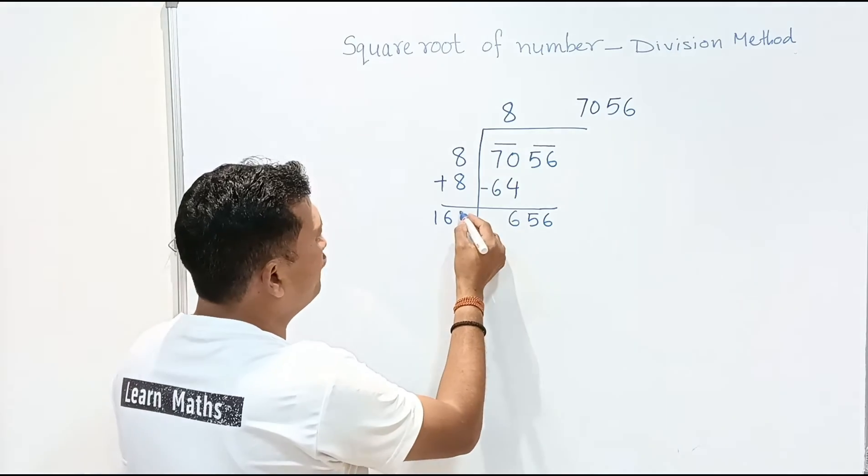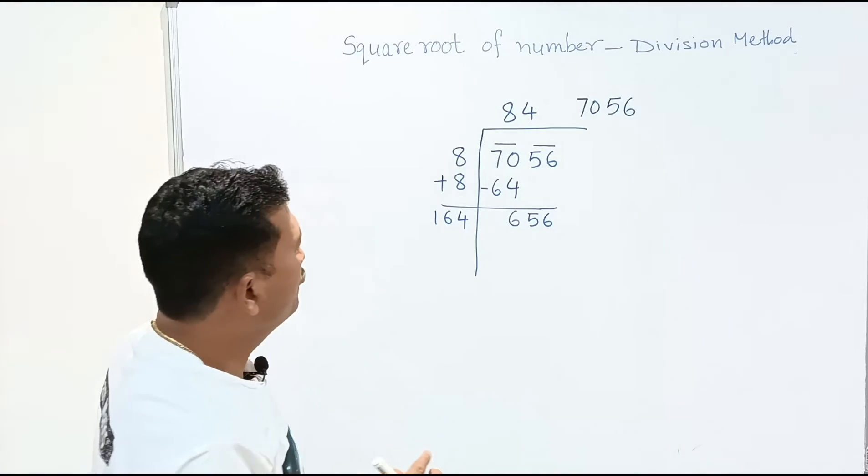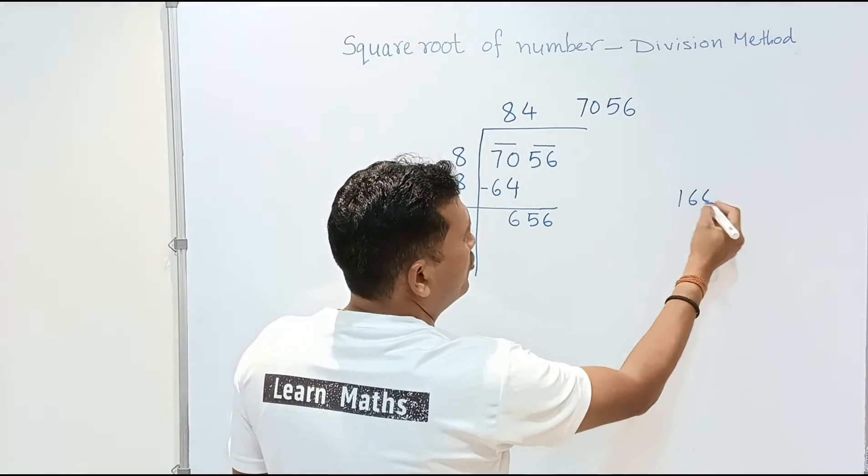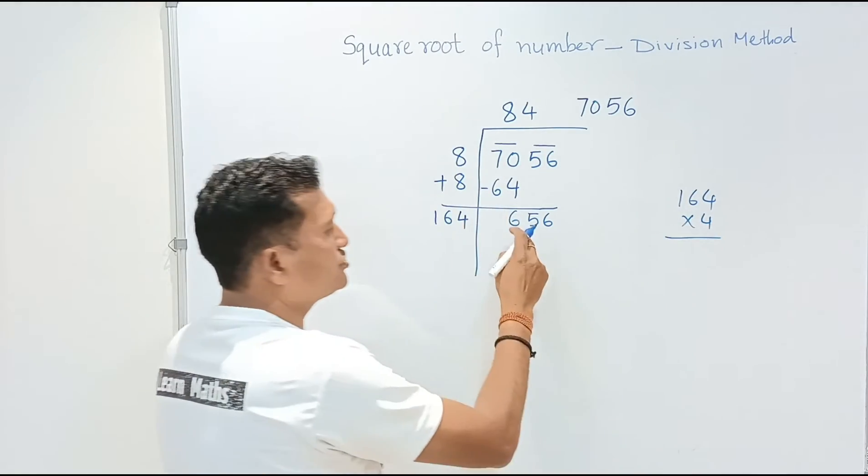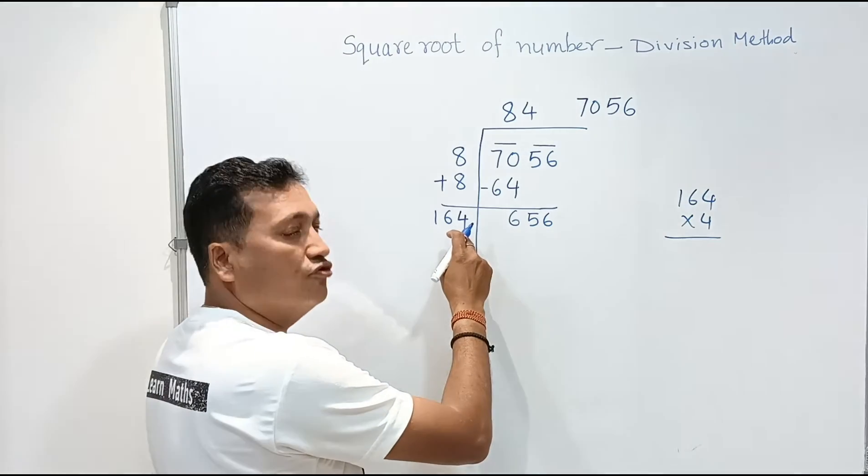So we will take here 4. And here also 4. Why we will take over here 4? Because 164 into 4, 164 into 4 gives us 656. That's why we will take here 4.